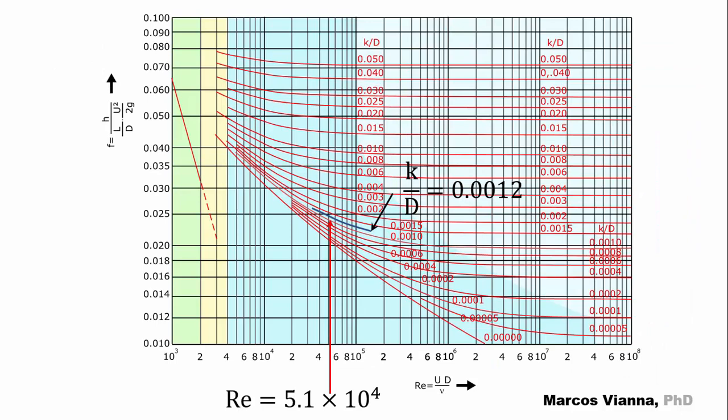There it is in the Moody diagram. And that's how we find F equals 0.0245.